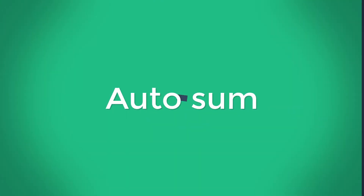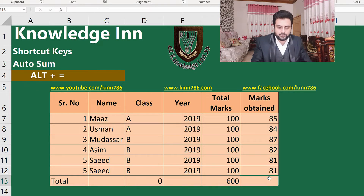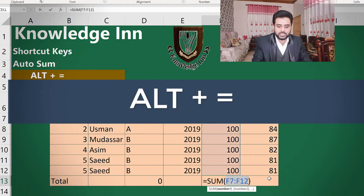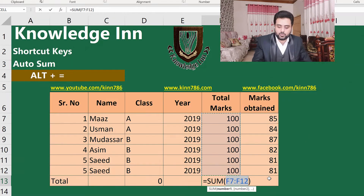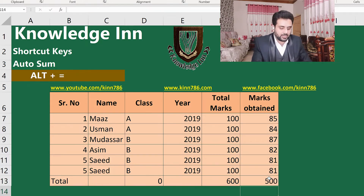Let's jump to the AutoSum formula. If we want to apply AutoSum, it's very simple — we just have to press Alt+= (Alt+Equal). It will insert the SUM formula automatically and you can see the result. So that shortcut is Alt+Equal.